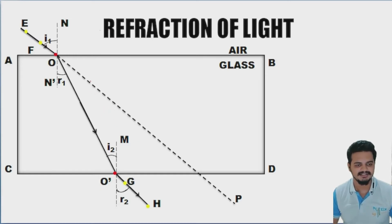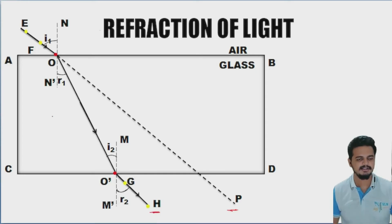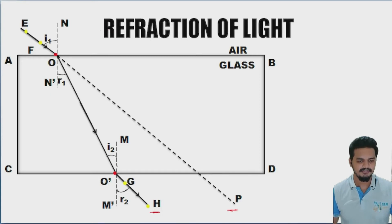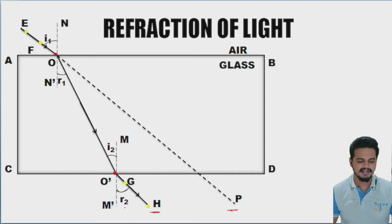The actual path of the light should have come to point P, but it came to point H instead. Now draw a line perpendicular to AB at point O — call it N-N dash. You can find the angle of incidence and angle of refraction here. Similarly, draw M-M dash perpendicular to CD, and find the incident ray i2 and refracted ray r2.